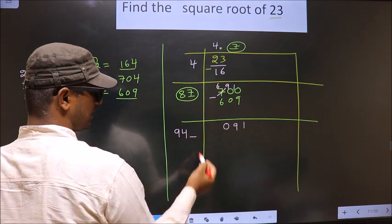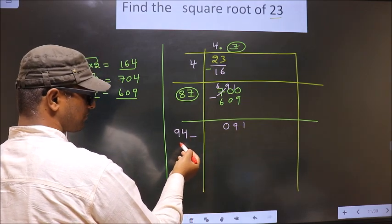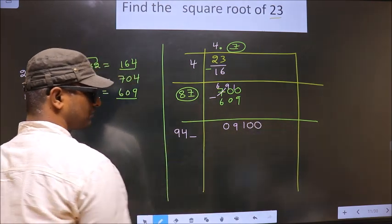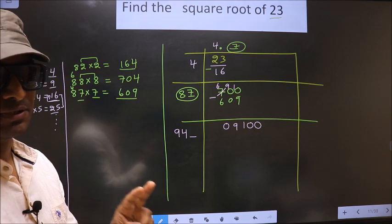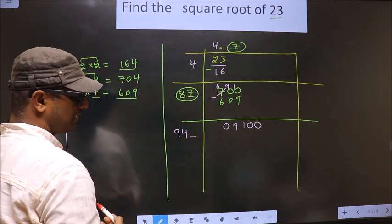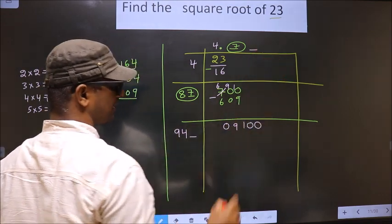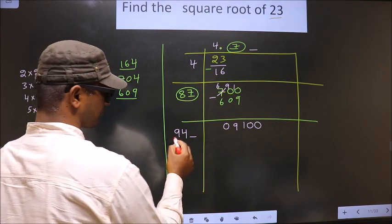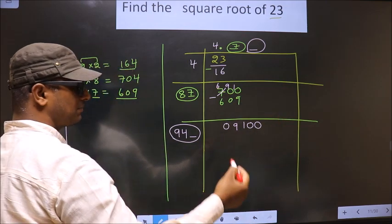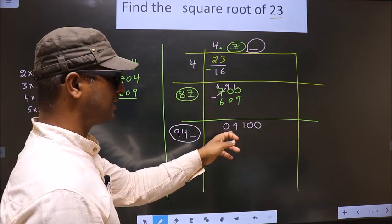Now I should write a number here. But when I write the number here, this number will be smaller than this. We already have a decimal, so directly take two zeros. Now here I should write a number. The condition is: whatever number I write here, I should write the same number alongside, and when you multiply this number by this number, the resulting number should be either equal to or smaller than this number.